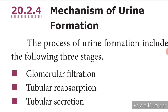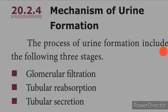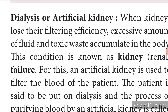A healthy person excretes one to two liters of urine per day. When kidneys fail to expel nitrogenous waste, it accumulates in the blood — a condition known as renal failure or kidney failure. Artificial kidneys can be used to dialyze or purify the blood — this is called dialysis. Purification of blood through an artificial kidney is called hemodialysis. If renal failure cannot be treated by drugs or dialysis, the patient is advised to undergo kidney transplantation.